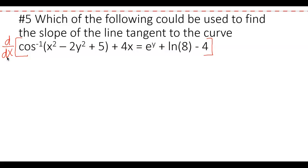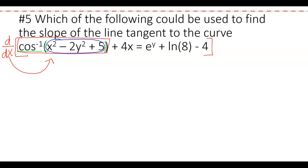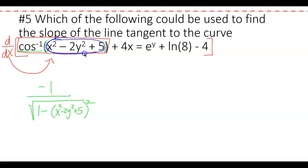The first term is an arccos with a chain rule — outside function and inside function. The derivative of arccos is negative 1 over the square root of (1 minus the inside squared). We then multiply by the derivative of the inside: derivative of x² is 2x, and the derivative of negative 4y is negative 4y', since it's a y term. The derivative of the constant 5 goes away.